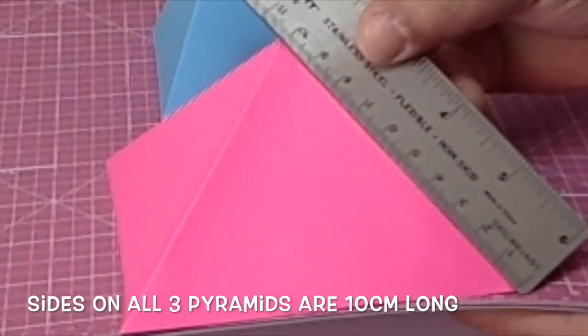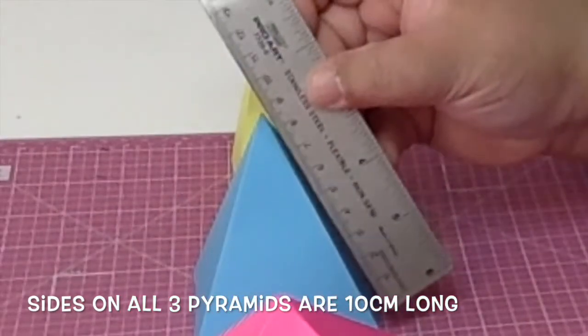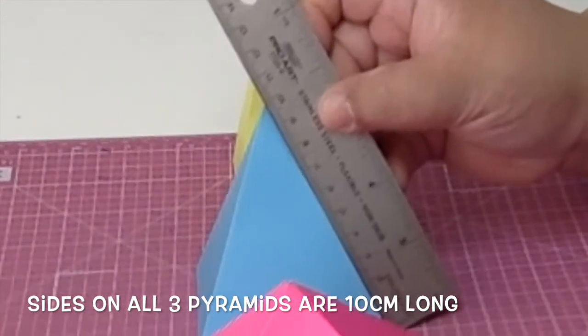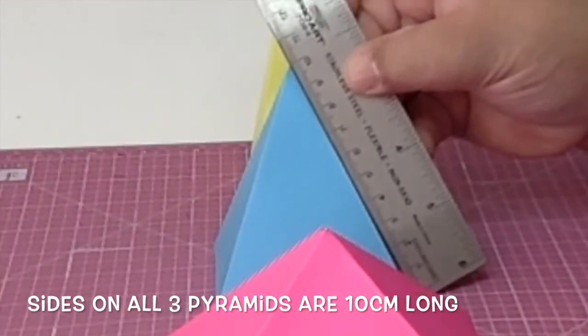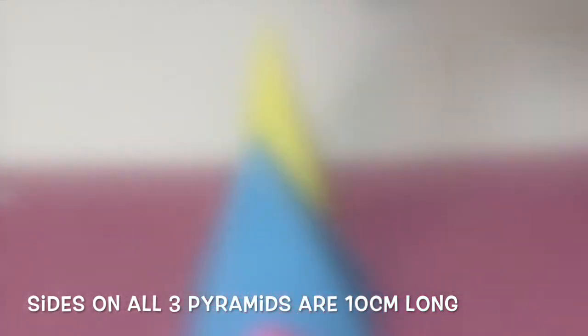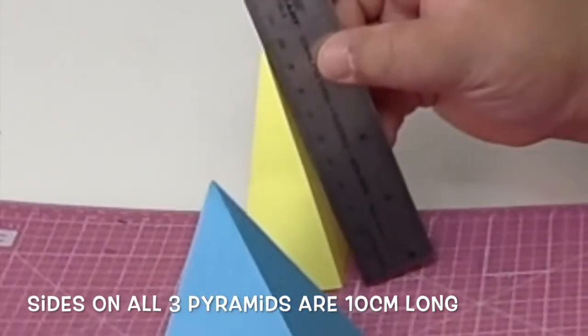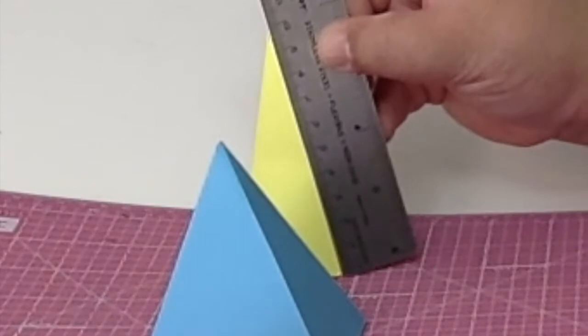The pyramid sides can all measure the same length, but the height is really determined by the angle at the apex. Since it's got four sides, just keep in mind that a right pyramid's apex never exceeds 45 degrees on any one side.